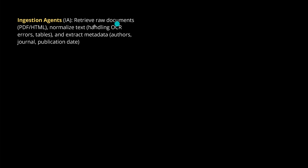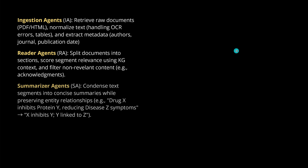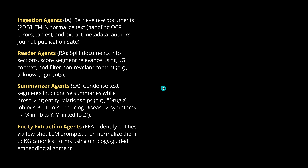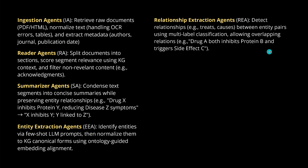First, we retrieve all raw documents — normally PDF or HTML. Then we split the documents into sections, score the segments that are relevant using the knowledge graph context, and filter out all non-relevant context. We condense the text segments into summaries while preserving the complete entity-relationship manifolds. Entity extraction agents identify entities via few-shot LLM prompts, normalize them to knowledge graph canonical forms using ontology-guided embedding alignment. We also need a relationship extraction agent — what does it cause, what is the base?